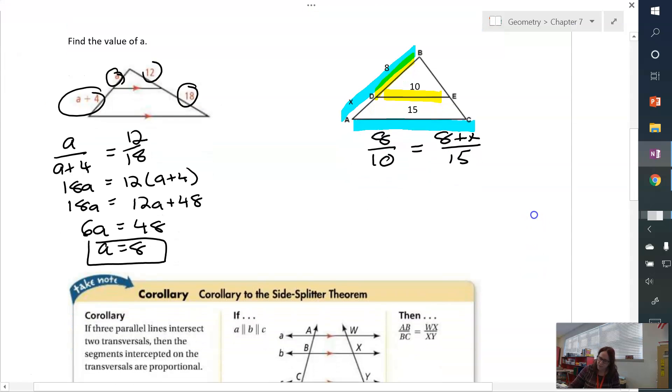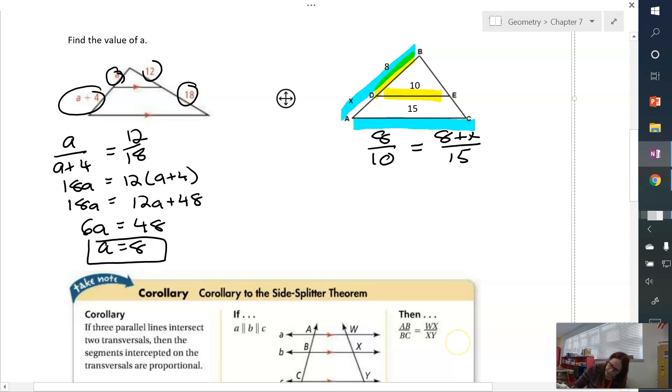So here, I'm going to cross multiply, and I get 8 times 15. I get 120 equals 80 plus 10x. So now, all I'm doing is the algebra to solve for my x. Subtract 80 from both sides. I get 40 equals 10x. x equals 4. So that's how our side splitter theorem works.